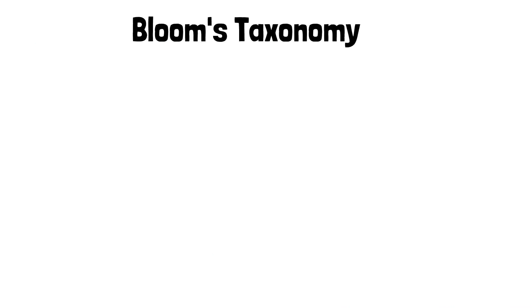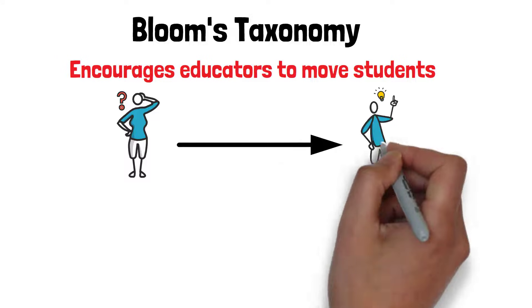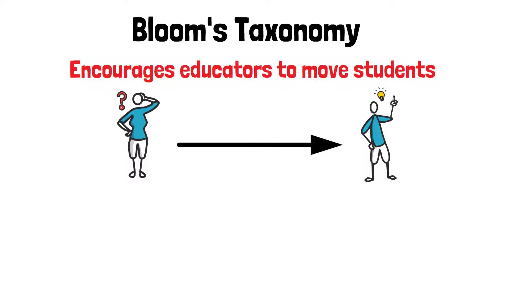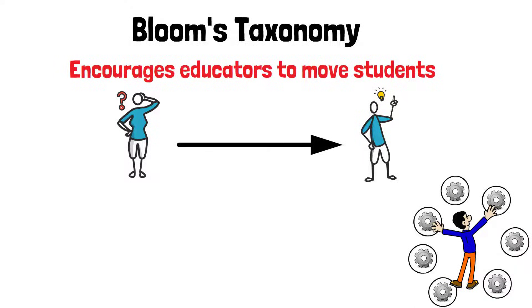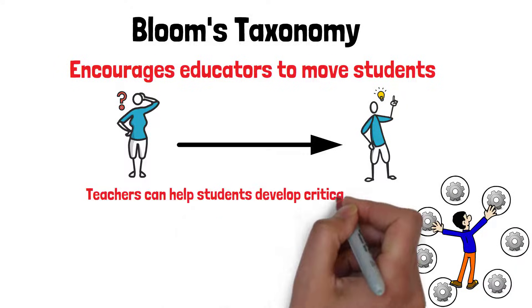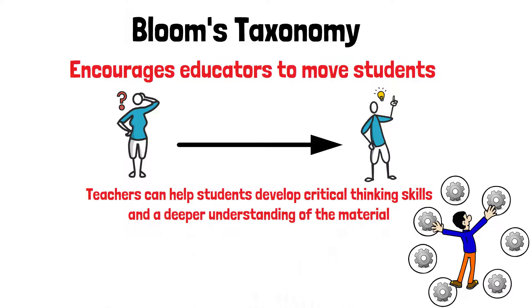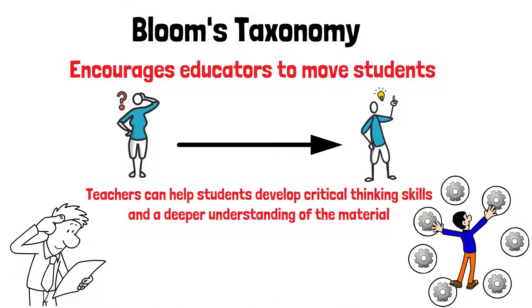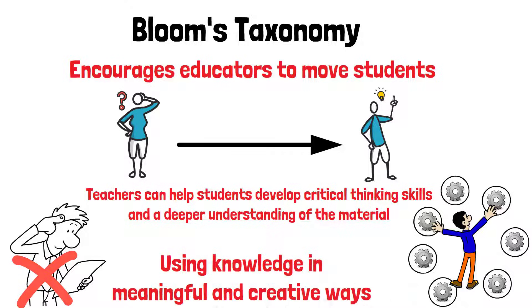Bloom's Taxonomy encourages educators to move students beyond simple memorization to higher levels of thinking. By structuring lessons around these six levels, teachers can help students develop critical thinking skills and a deeper understanding of the material. This approach ensures that education isn't just about remembering facts, but about using knowledge in meaningful and creative ways.